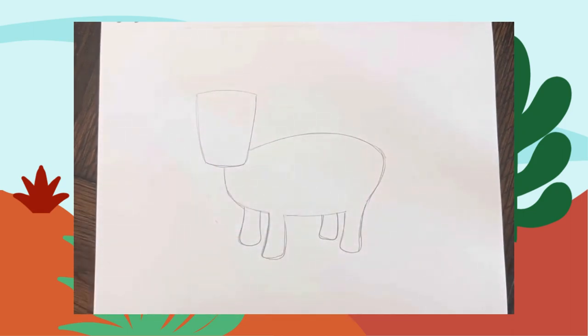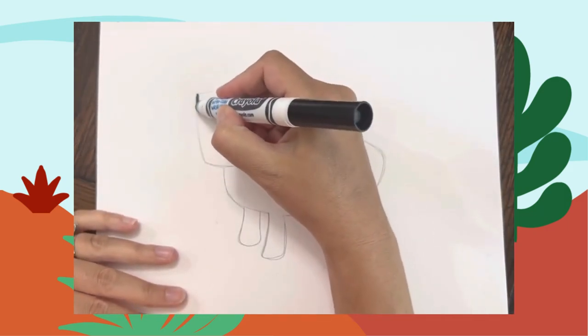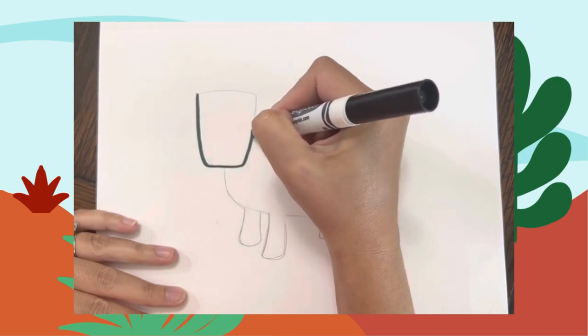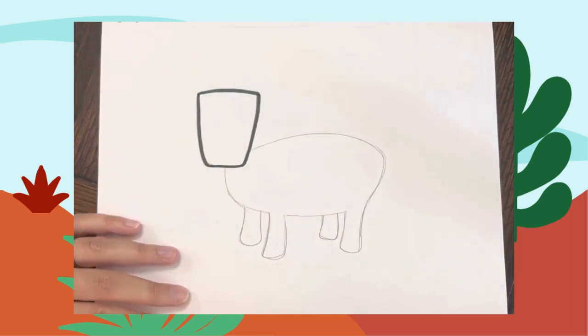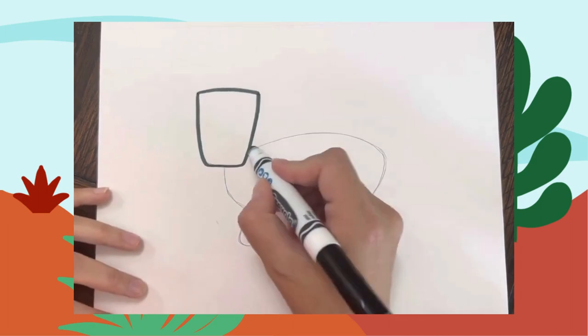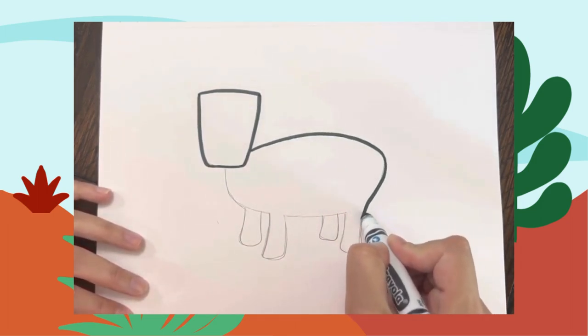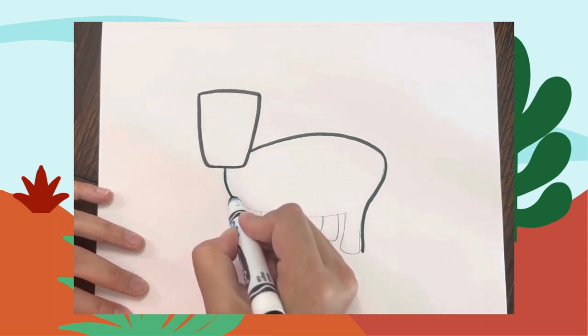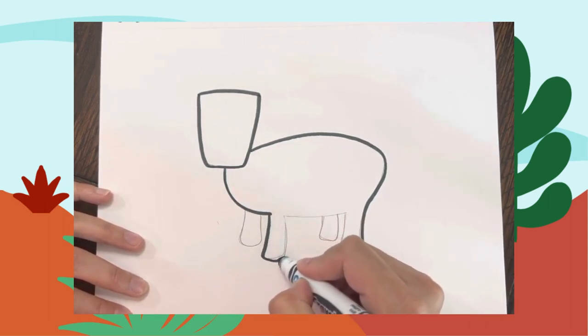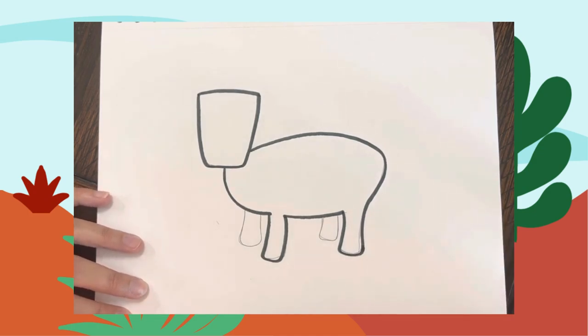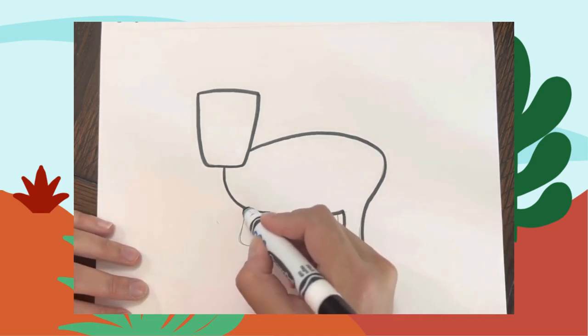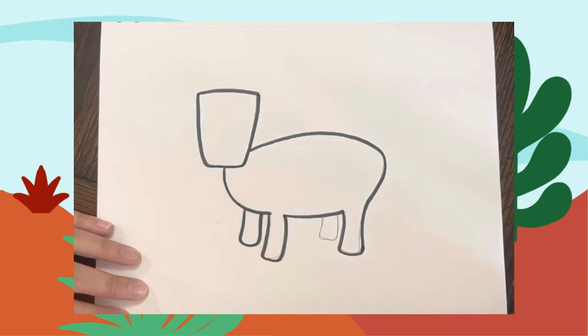We're going to trace over what we've done so far, tracing over his head and then tracing that body. All right, we need a tail.